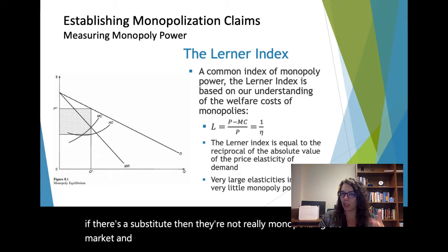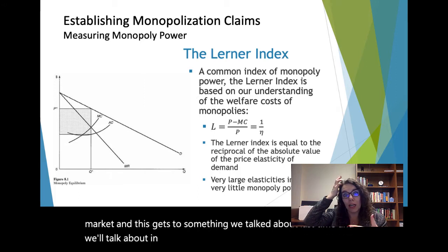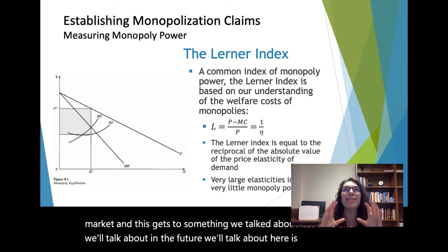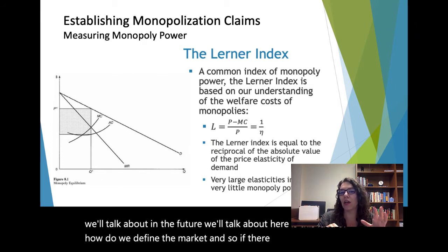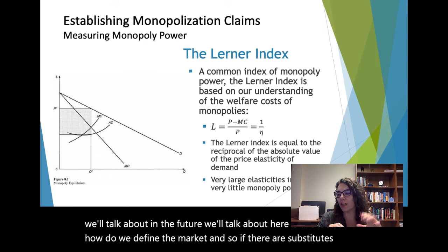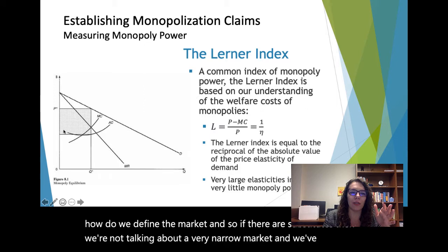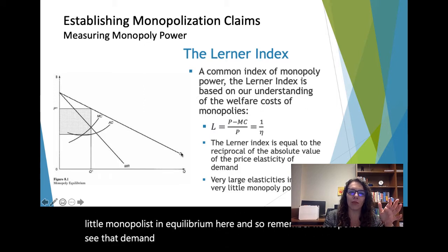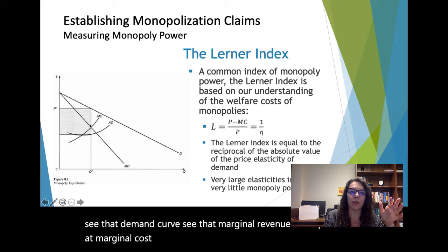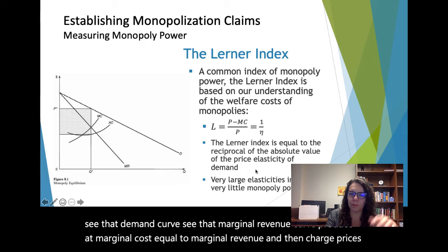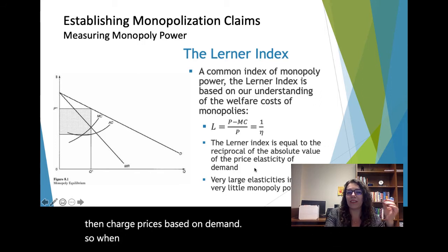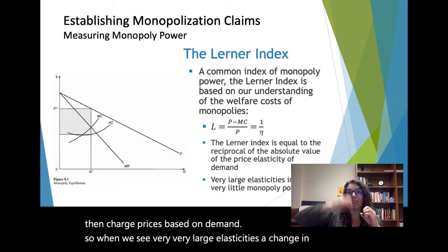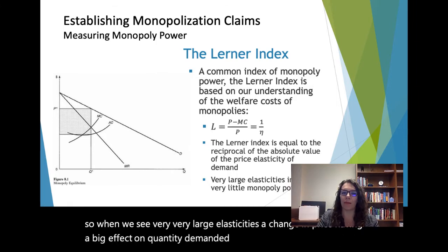We talked about the Lerner Index being a measure of monopoly power — it's price minus marginal cost, but it's also the inverse of the elasticity. The more market power you have, the more ability you have as a firm to raise prices without seeing a reduction in quantity demanded. If there's a substitute available, they're not really monopolizing the market.